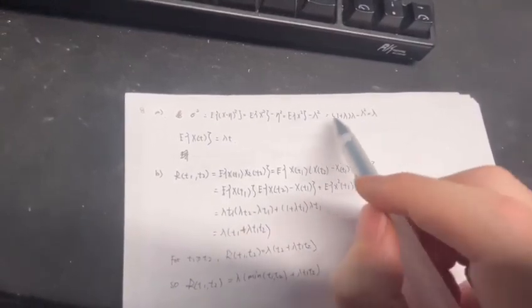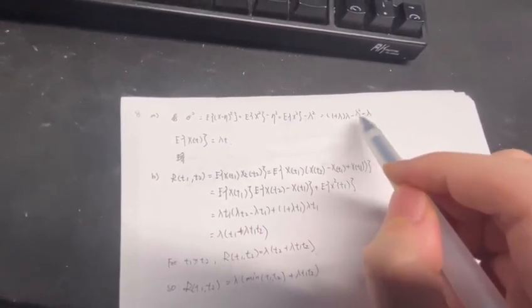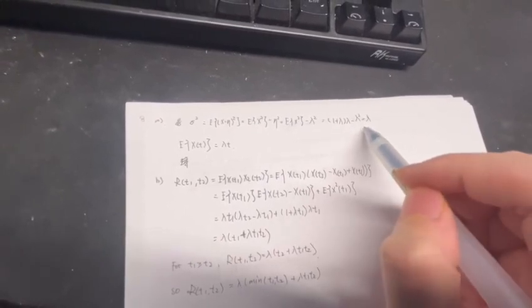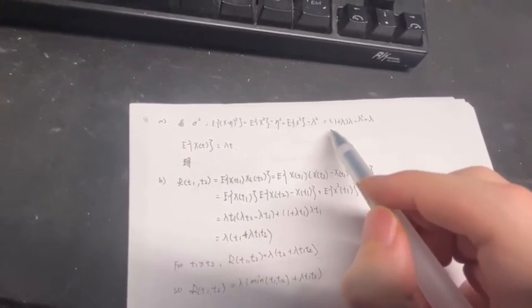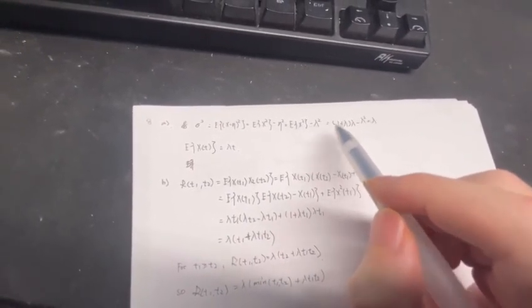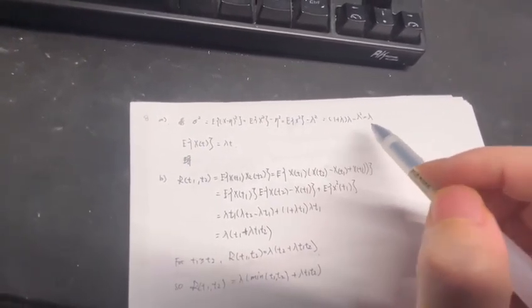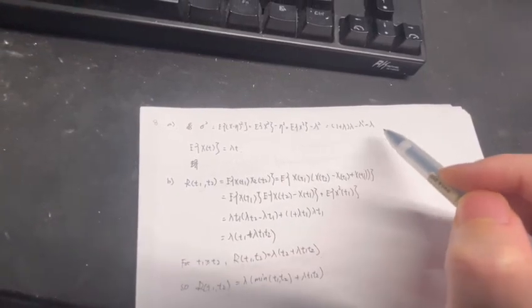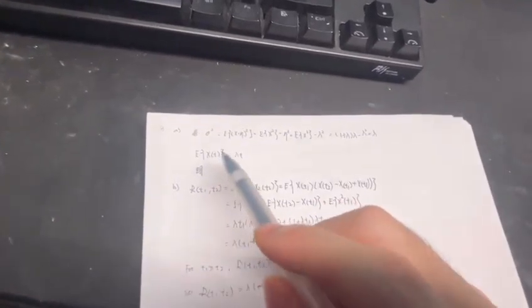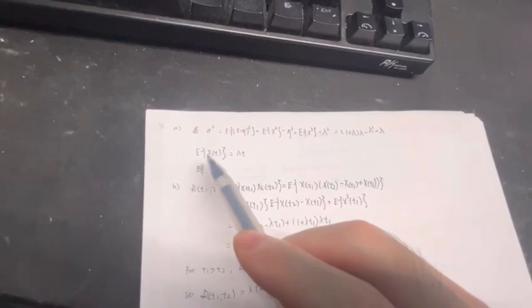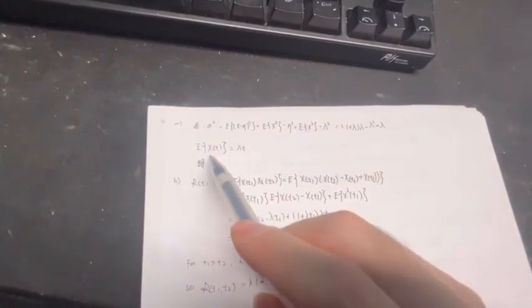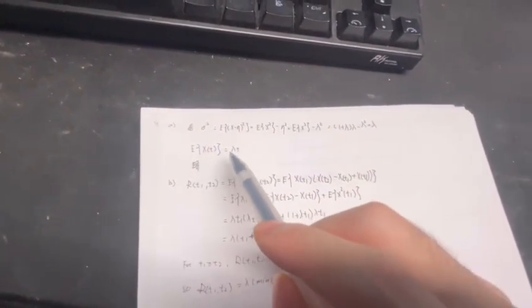We keep this part right here, so it's minus lambda². This part equals lambda plus lambda² minus lambda². So the final result will be lambda. Therefore, E[X(t)] equals lambda times t.